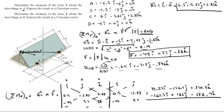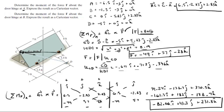Adding the positive and negative diagonal terms together, the moment about A equals negative 82.06i plus 43.3j plus 231.80k. This is the final answer for the moment created by the force about hinge A.